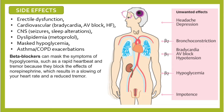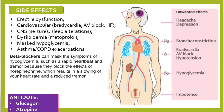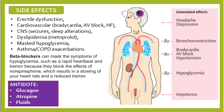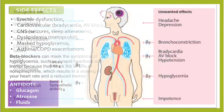Non-selective beta blockers can cause asthma or COPD exacerbations. The antidote to reverse the effects of beta blockers includes glucagon, atropine, and fluids.